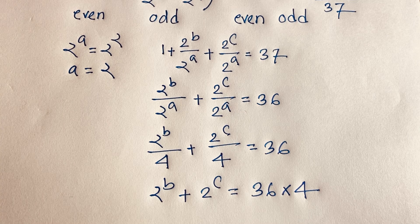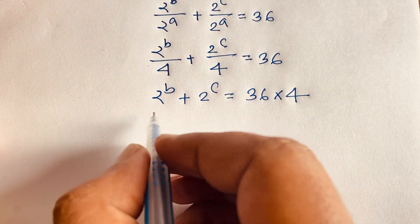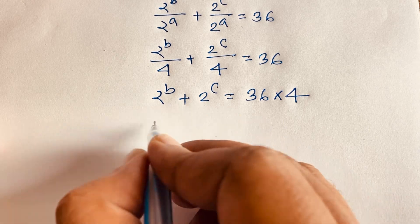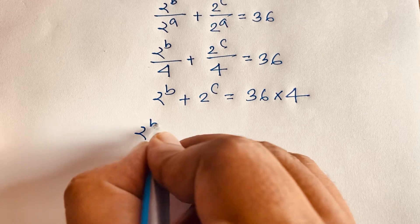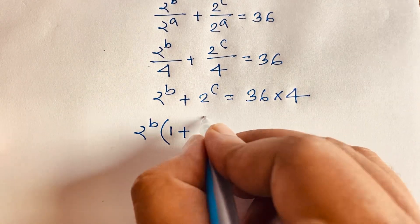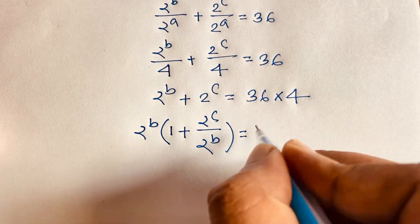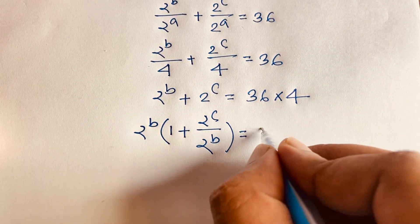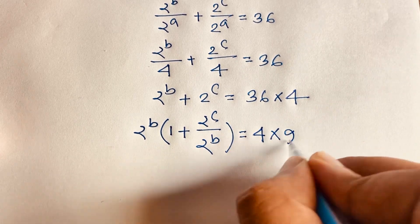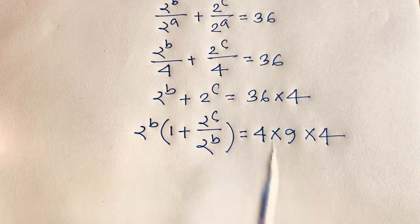Now if I evaluate this expression, I take out the common factor 2^b. So 2^b times (1 plus 2^c over 2^b) equals 36 times 4. I can say 36 times 4 equals 4 times 9 times 4, and 4 times 9 is 36.